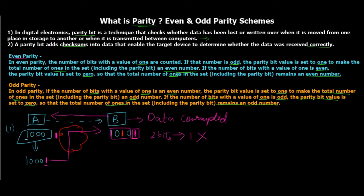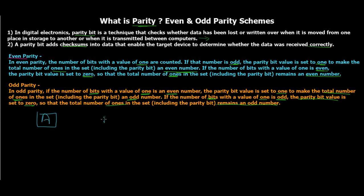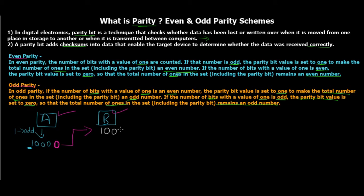Now let's try odd parity. Again A sends 1000 to B, now using odd parity. There is one bit high — one is already odd — so with odd parity scheme, since the count is already odd, the parity bit is set to zero. The data sent becomes 10000. Again suppose a bit gets flipped in transit and B receives 10010 with parity bit zero.